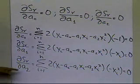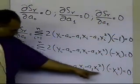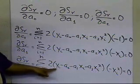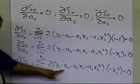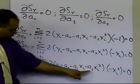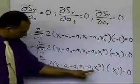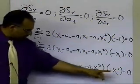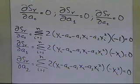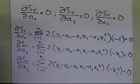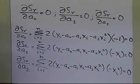The last derivative term comes from differentiating with respect to a2, which gives minus xi squared. What I need to do now is write individual summations so that I can set this up in equation form.